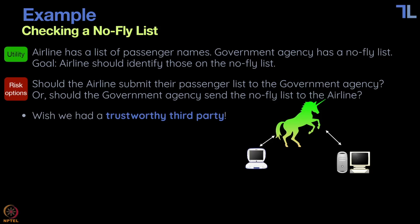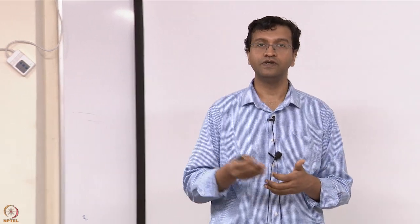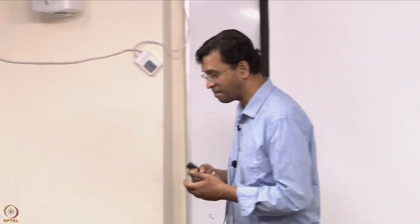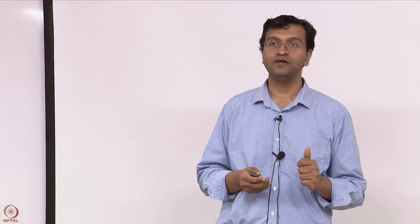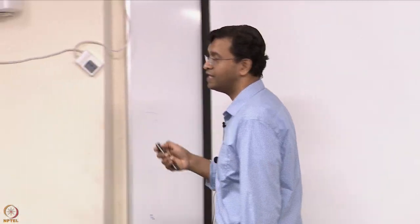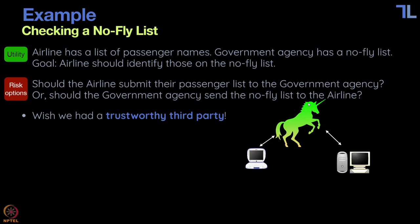This is a time when you wish you had a trustworthy third party — then you could have the best of both worlds. This trusted third party would take inputs from both parties — the passenger list and the no-fly list — check for an intersection, and just reveal the intersection to the airline. The government doesn't even need to know who tried to fly. They can be trusted to do this correctly, erase all data, and vanish. Unfortunately, this unicorn doesn't exist.